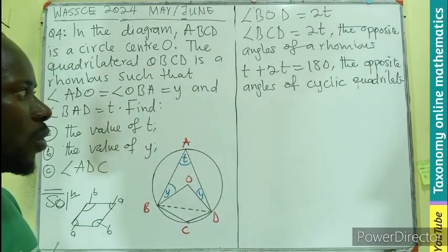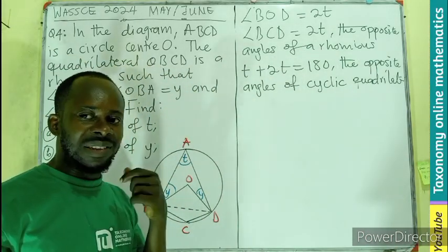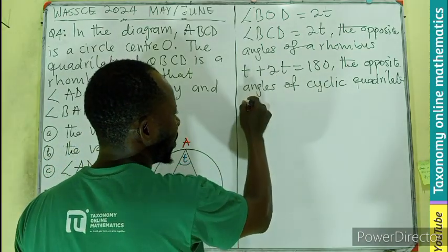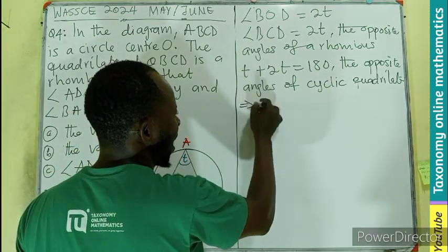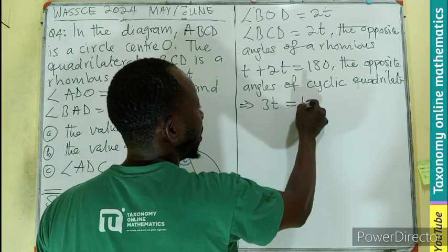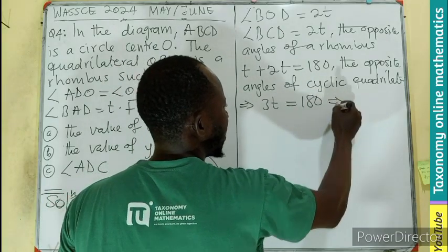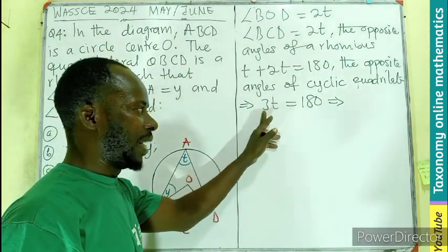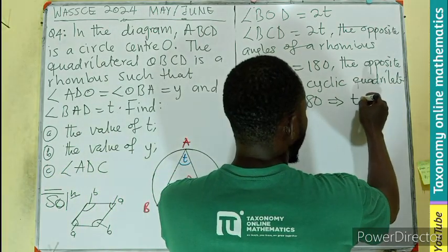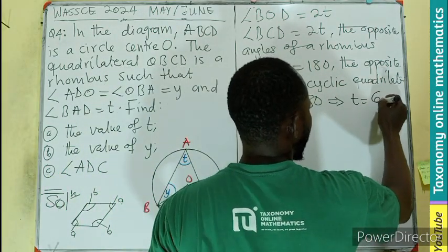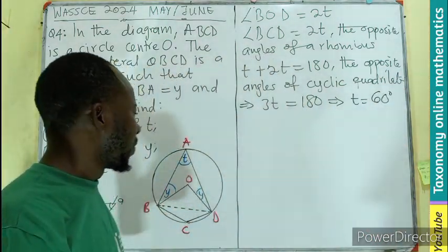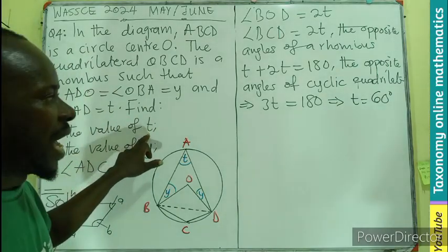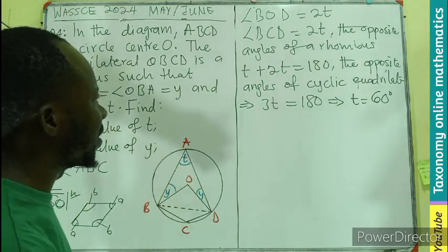That is true because of the opposite angles of a cyclic quadrilateral. So t plus 2t gives us 3t equals 180°. Dividing both sides by 3, t equals 60°. So the first part — finding t — gives us t = 60°.